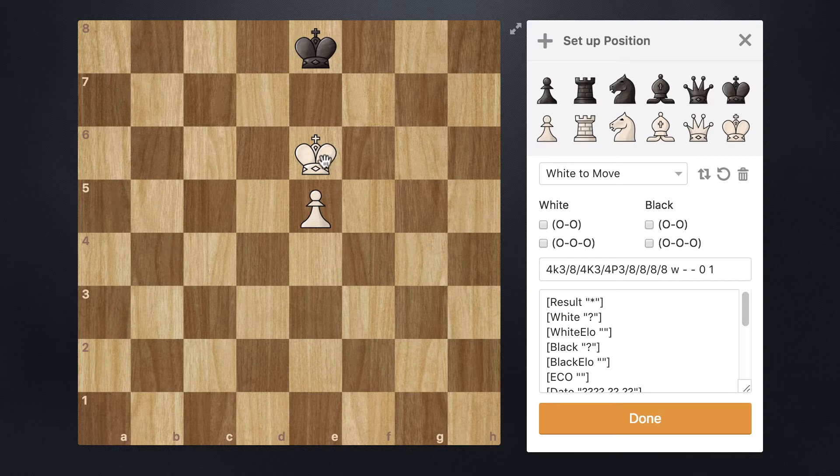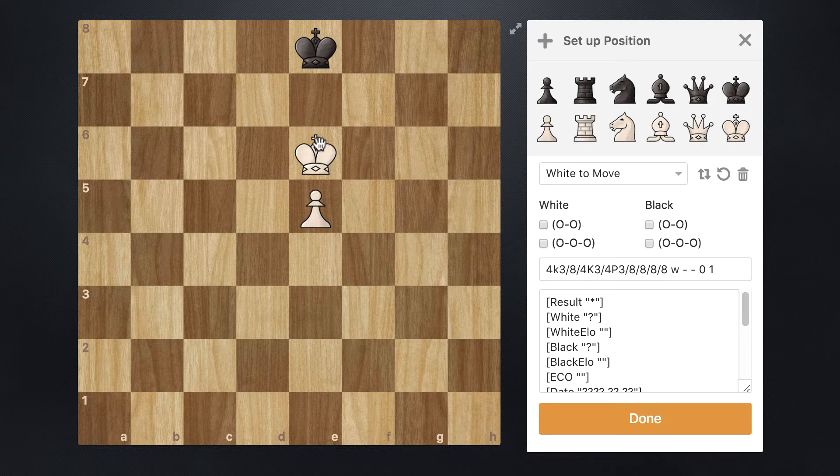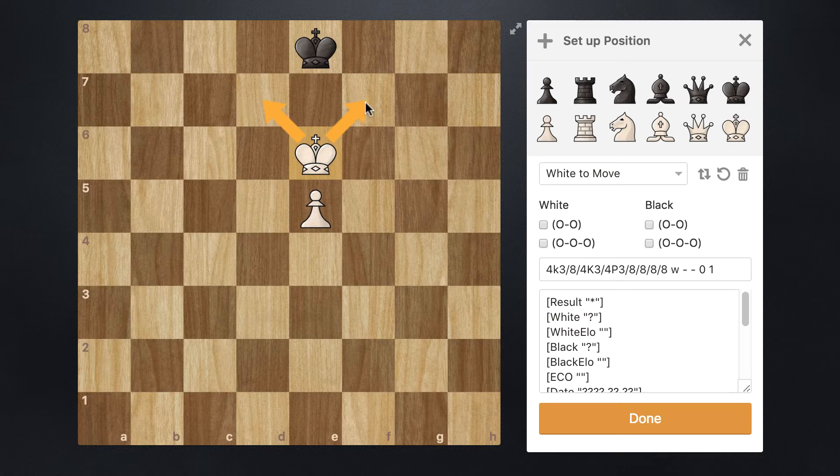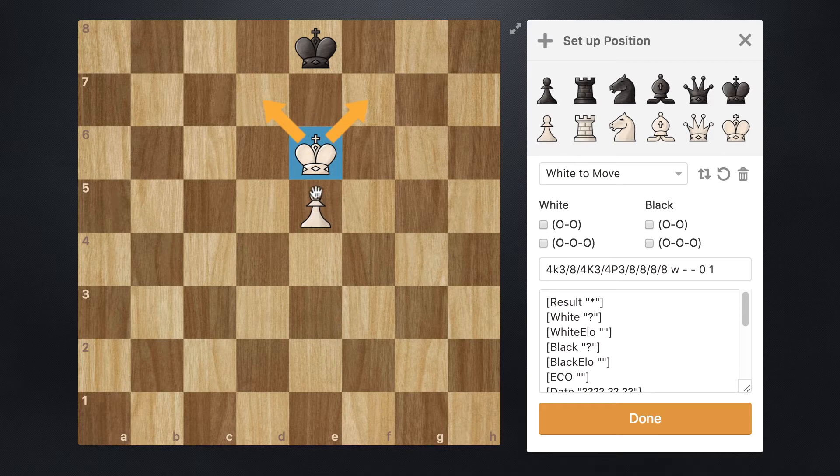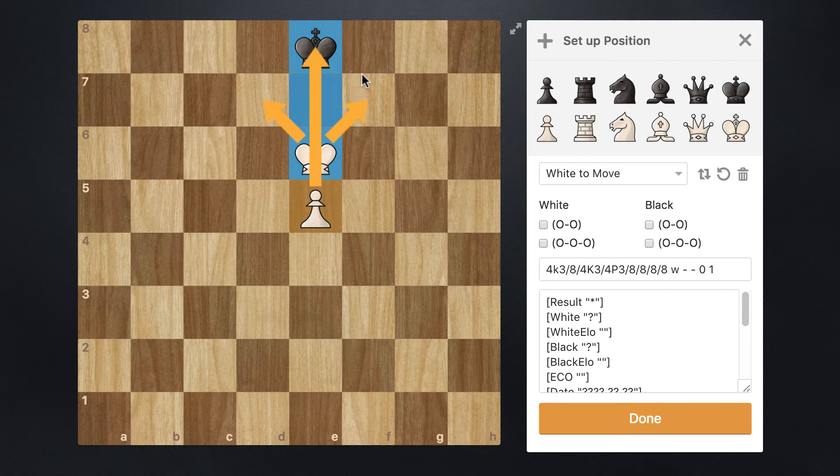So how we're going to accomplish this is essentially what we would like to do is with our king we would like to get him to one of these two squares. Now if our king can get to one of these two squares then that will mean that he will be controlling in this case e6, e7, and e8. Now if our king is controlling these three squares then we can safely march our pawn up all the way until it gets promoted.